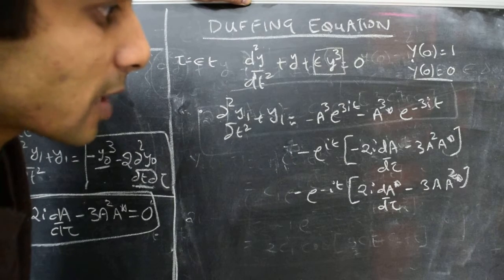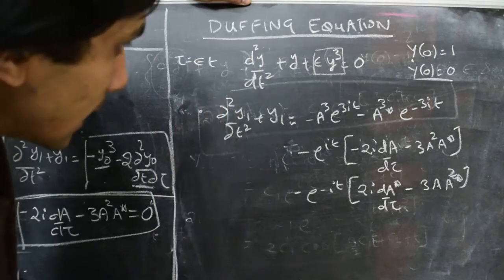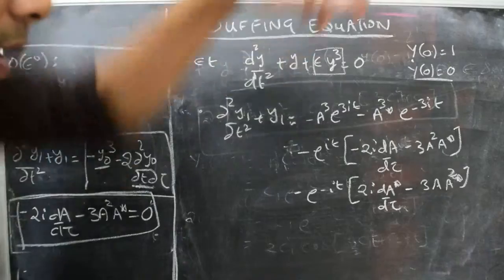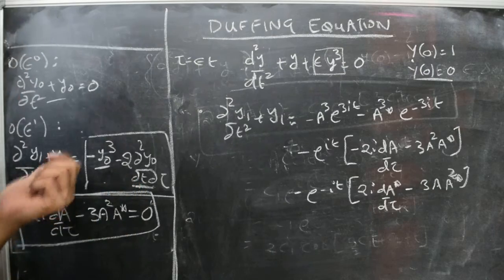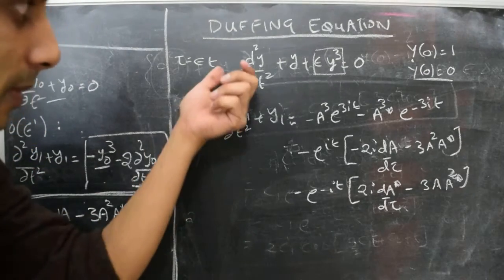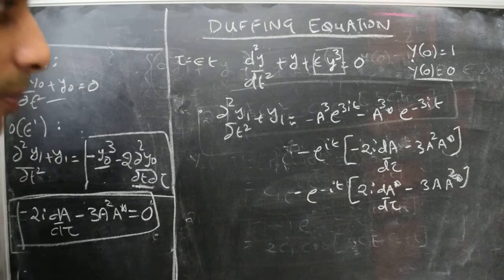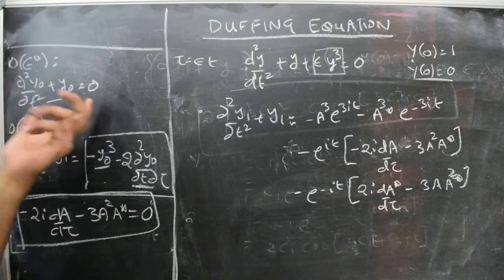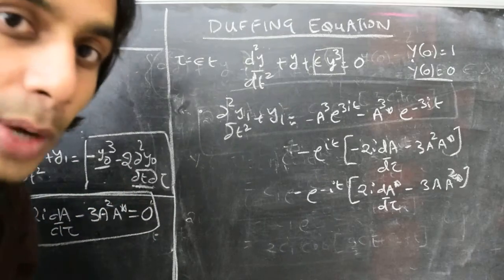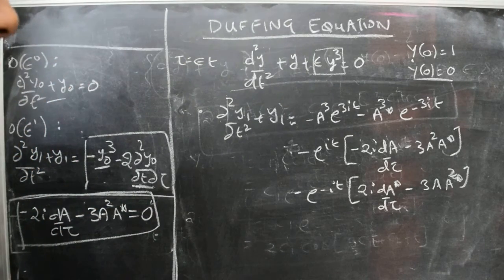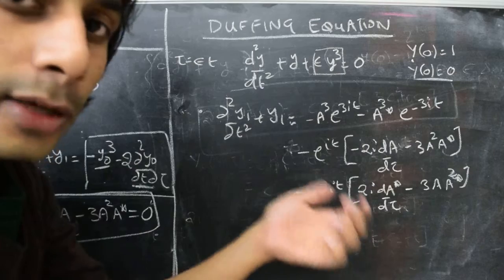The idea behind using a multi-scale expansion method is to introduce a new time scale into the problem, tau, which is epsilon times t, and then look for an expansion of y in terms of functions y0 and y1, which are both functions of the time t and the time tau. In the process, we find a second-order homogeneous linear differential equation for y0, whose solution we express in terms of an undetermined function a, which is a function of tau.